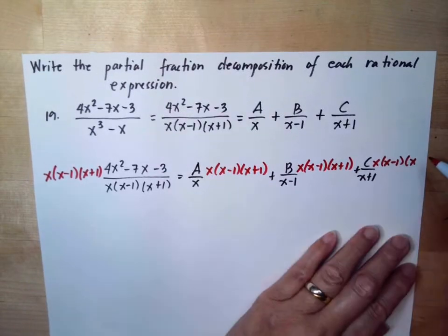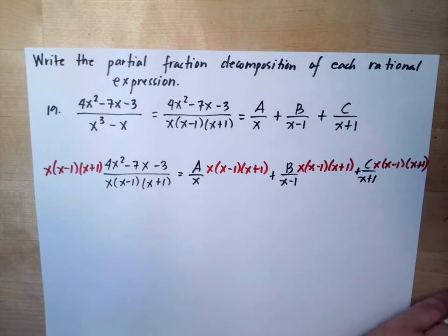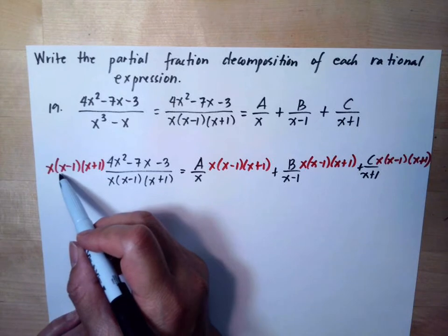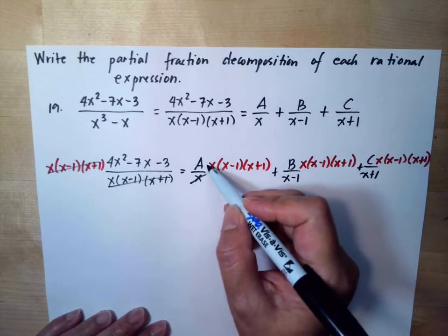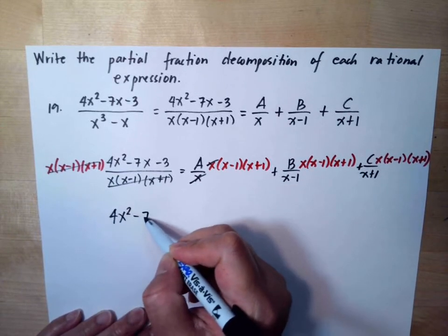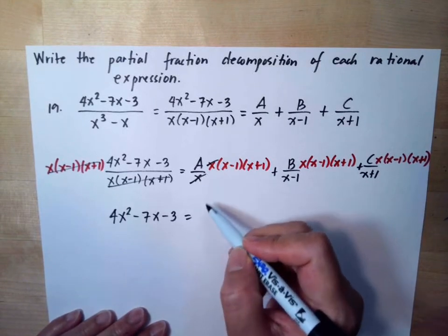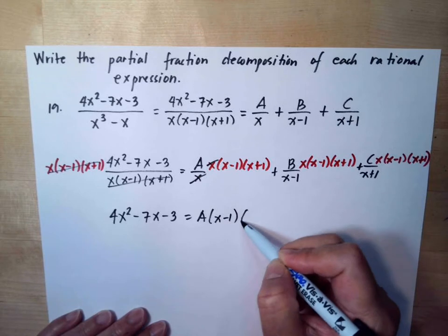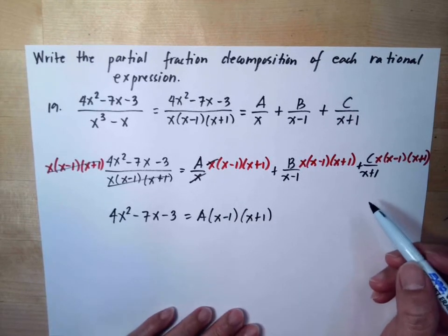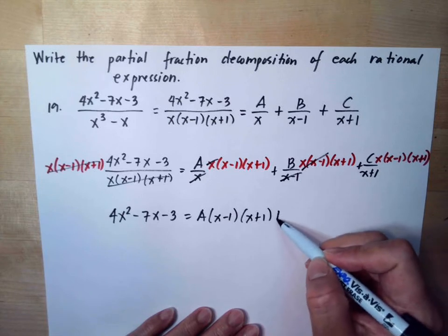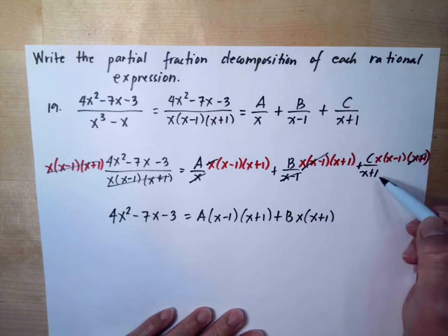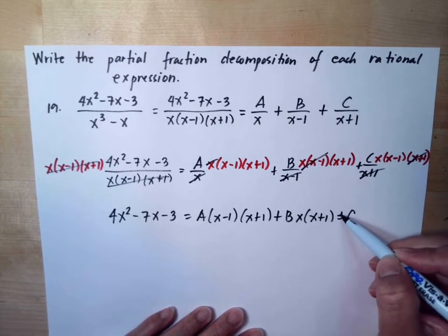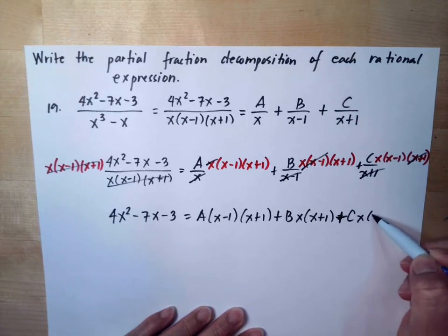Let's simplify. On the left side, x(x minus 1)(x plus 1) cancels with the denominator, giving 4x squared minus 7x minus 3. For the A term, x cancels, leaving A(x minus 1)(x plus 1). For the B term, (x minus 1) cancels, leaving Bx(x plus 1). For the C term, (x plus 1) cancels, leaving Cx(x minus 1).